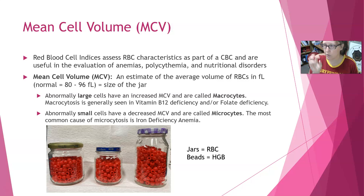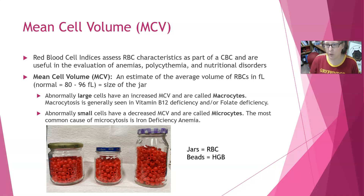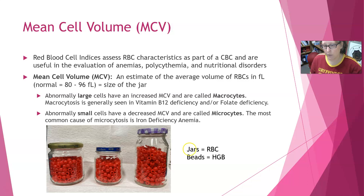Microcytes have a smaller volume because they're a smaller container — a smaller jar. The most common cause of microcytosis is iron deficiency anemia. The abnormally large ones have an increased MCV; they're bigger jars with a bigger volume, and they're called macrocytes. These are generally seen with vitamin B12 deficiency and/or folate deficiency.